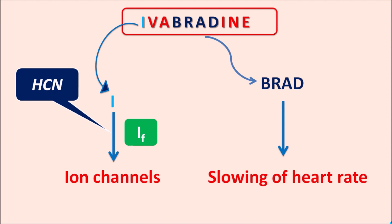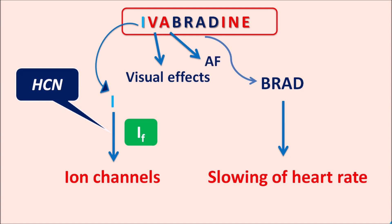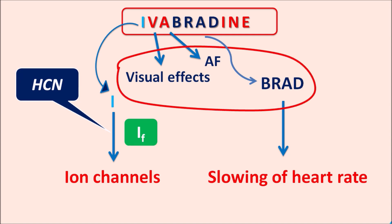Similarly, we can find other letters within the name of this drug. The letter 'V' indicates this drug produces some visual side effects. 'A' indicates it produces atrial fibrillation. So along with bradycardia, this drug produces visual effects as well as atrial fibrillation. These are the three important side effects produced by Ivabradine.